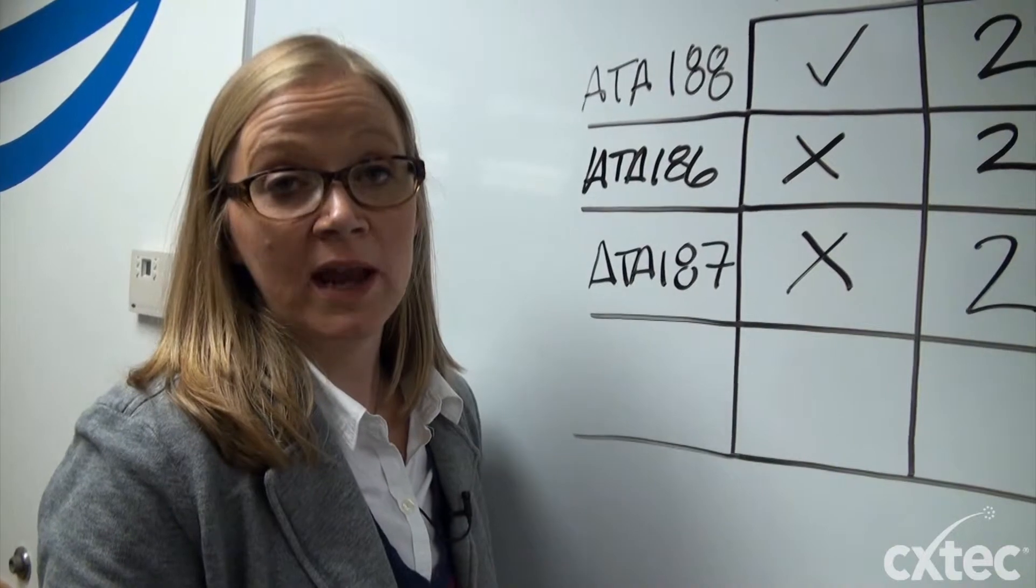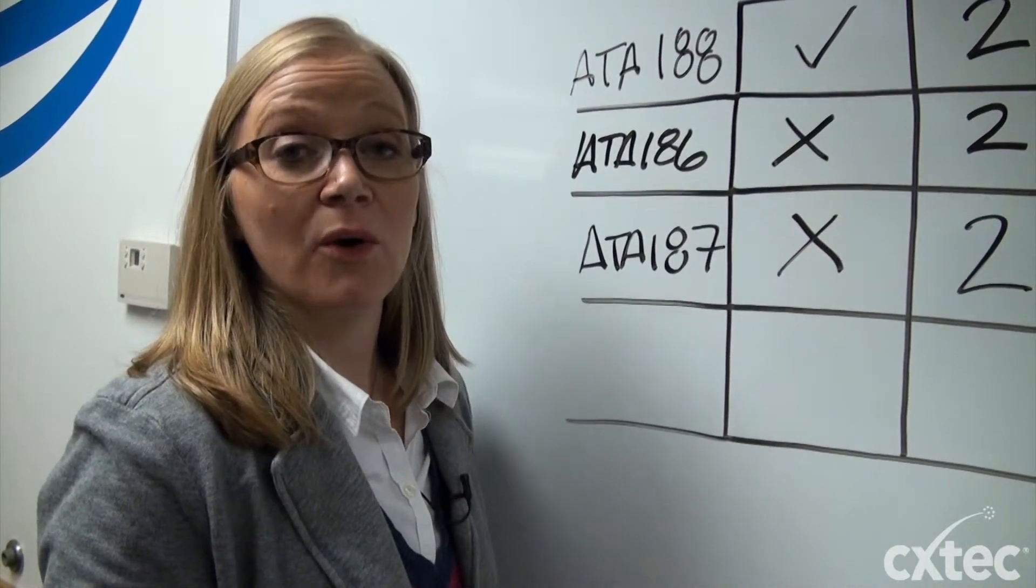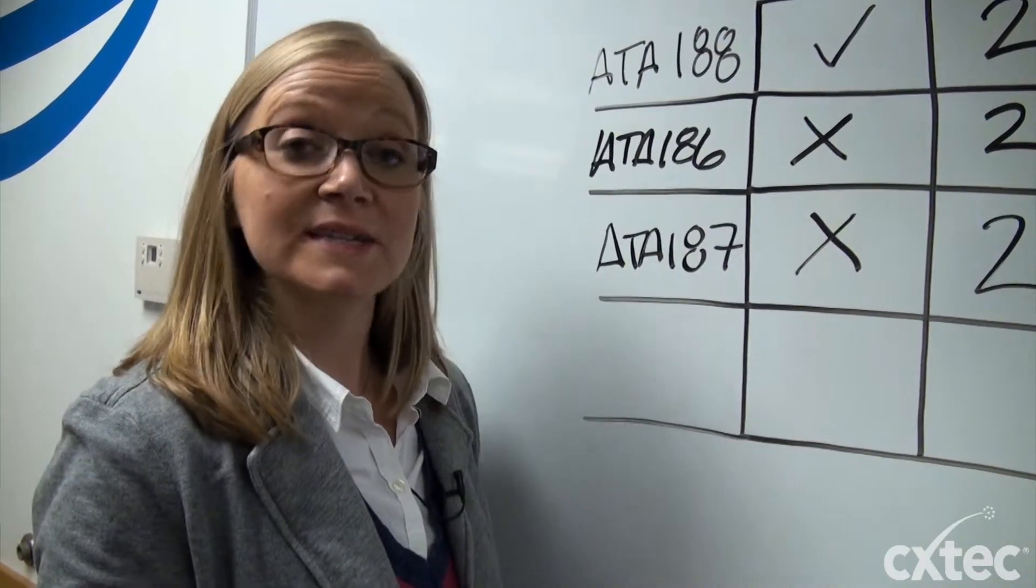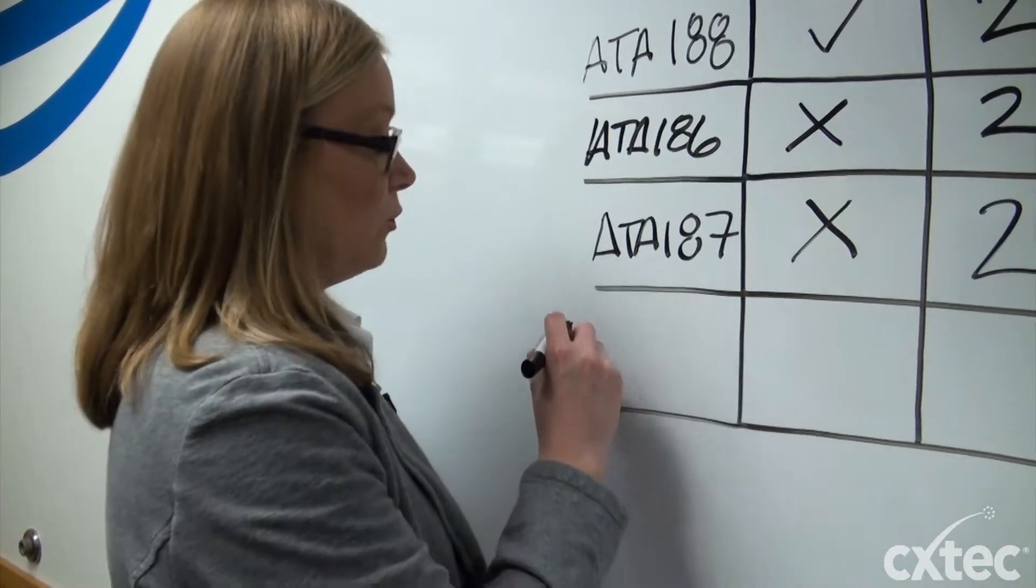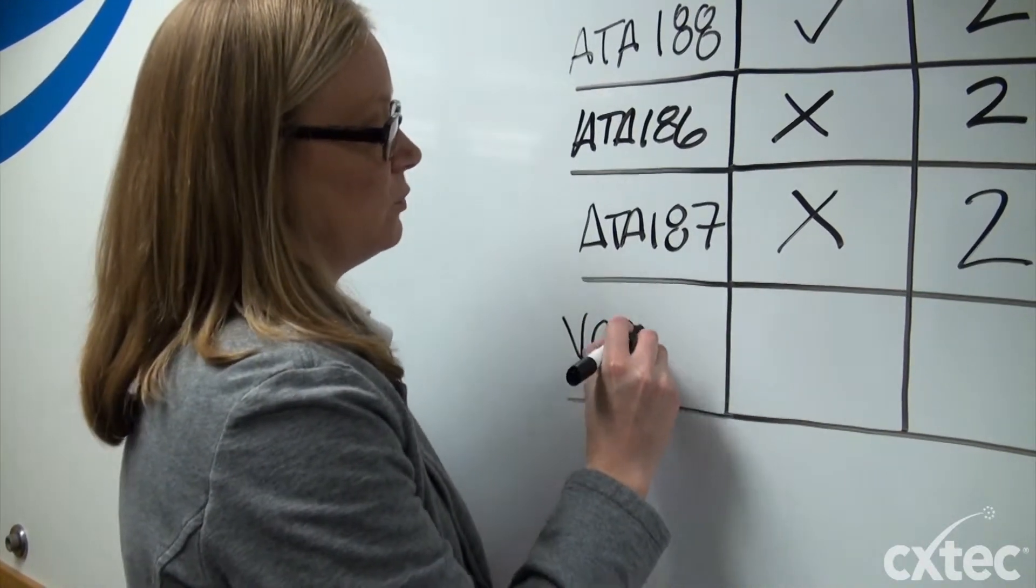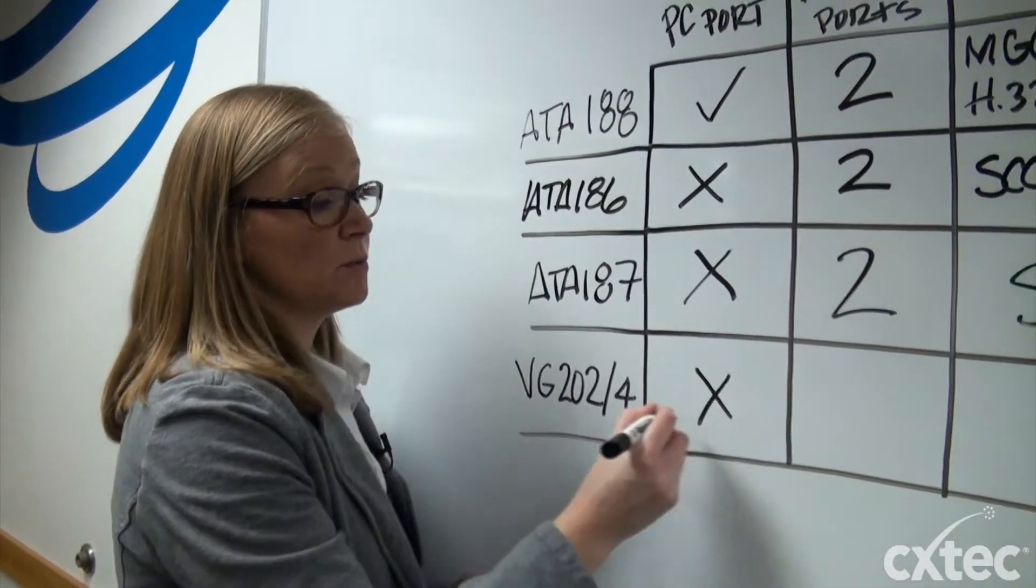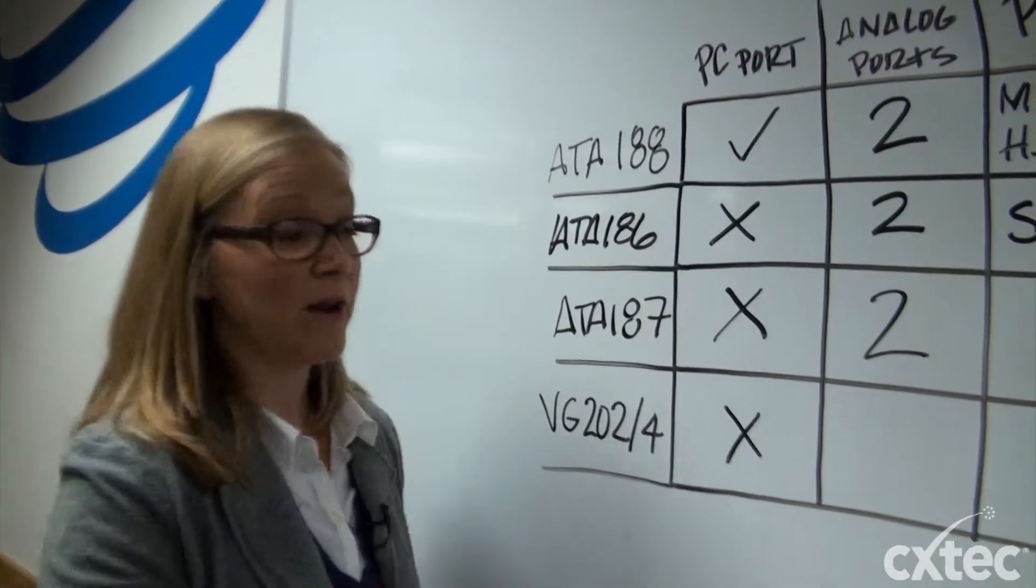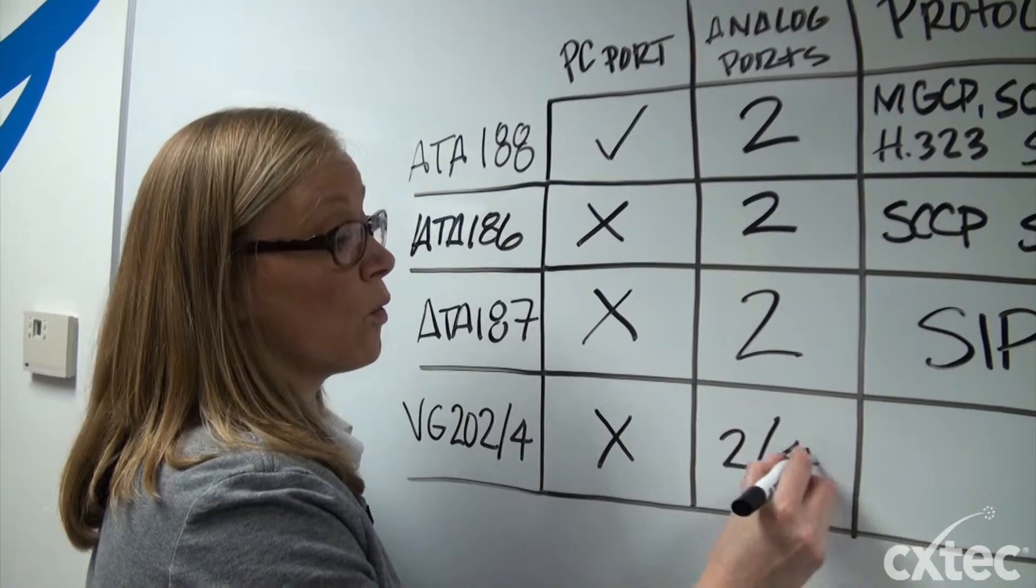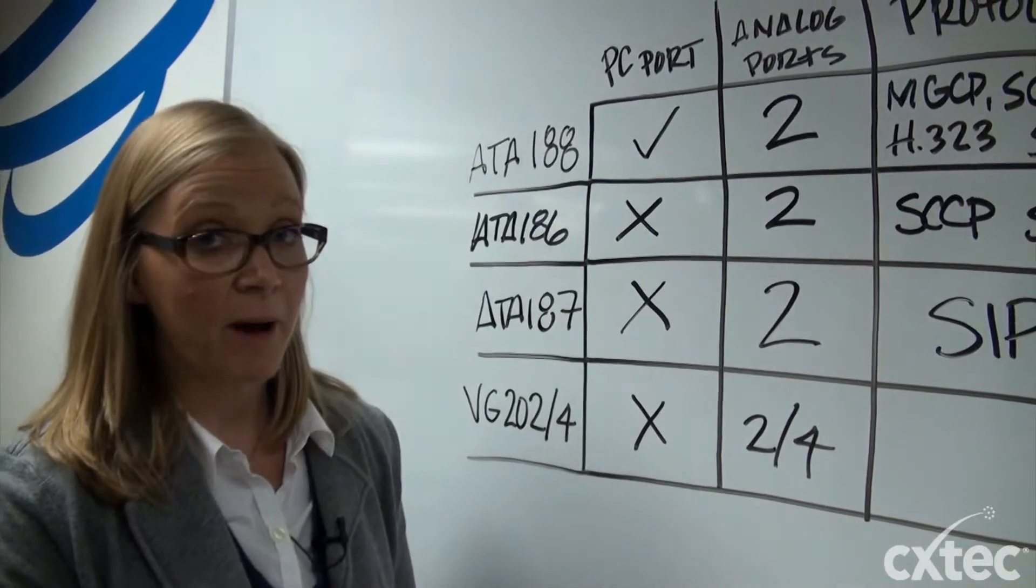In addition to the ATA 187 another option you have from Cisco is actually a voice gateway. A voice gateway 202 or a 204. These boxes still don't support PC ports but you do now have an option of supporting two or four analog devices on the box.